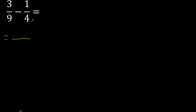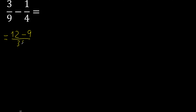First, multiply like this. 4 multiplied by 3 is 12. Minus 9 multiplied by 1 is 9. Here, 9 multiplied by 4 is 36.